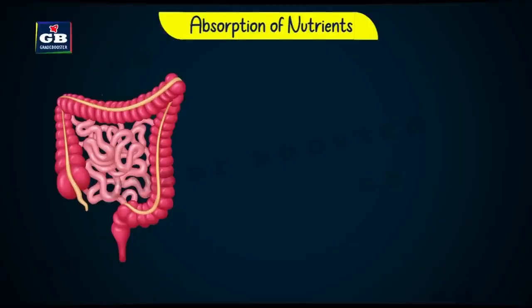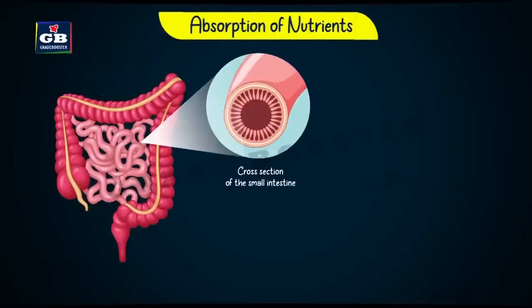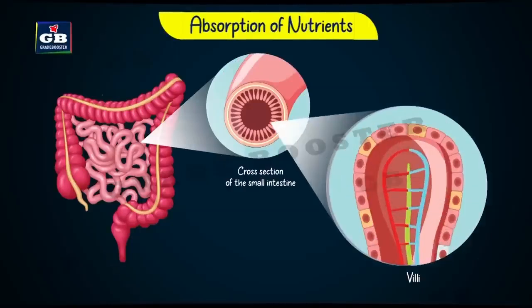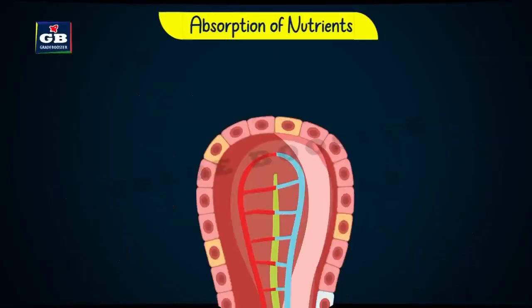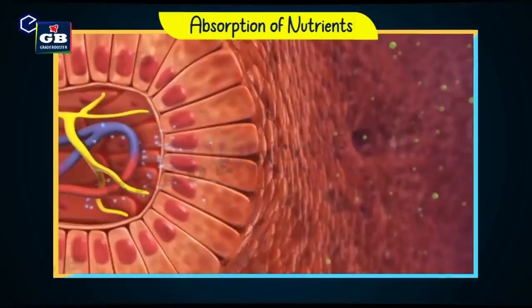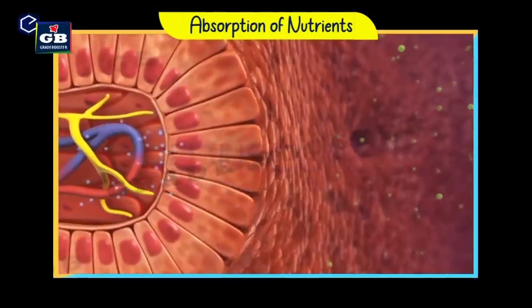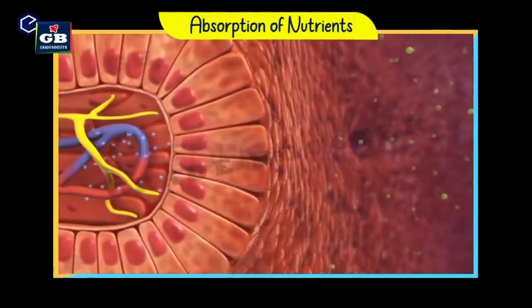Absorption of nutrients: The small intestine has numerous finger-like projections on its inner surface called villi. Blood vessels and lymph vessels are present inside these villi. Nutrients get absorbed into these vessels and enter the bloodstream.